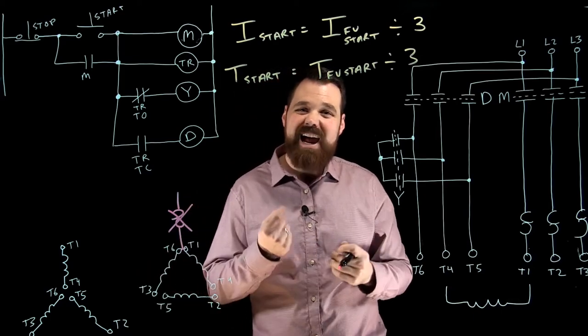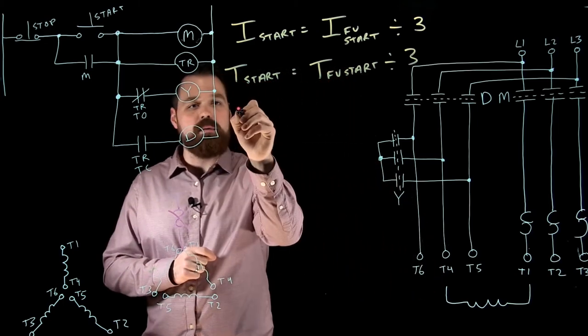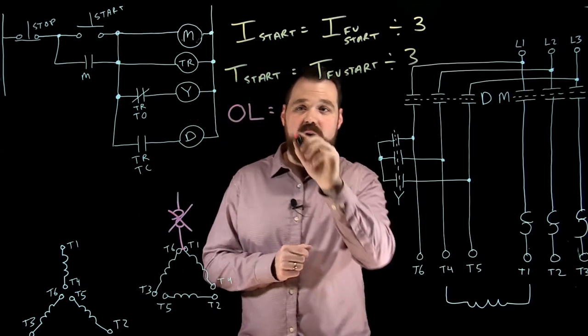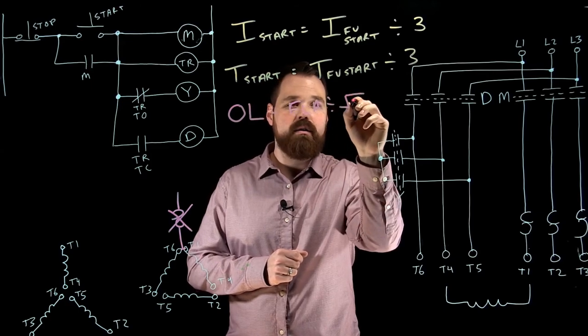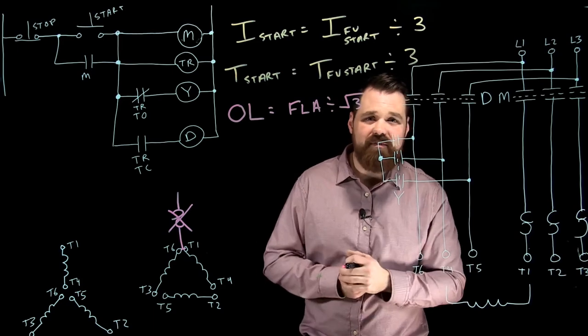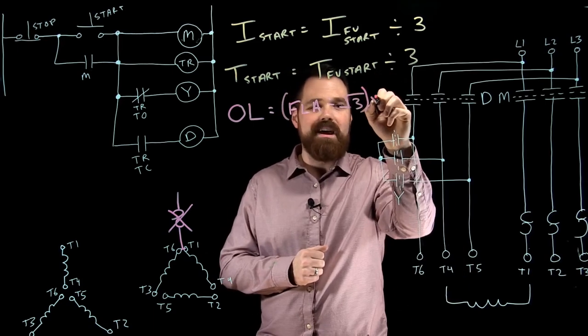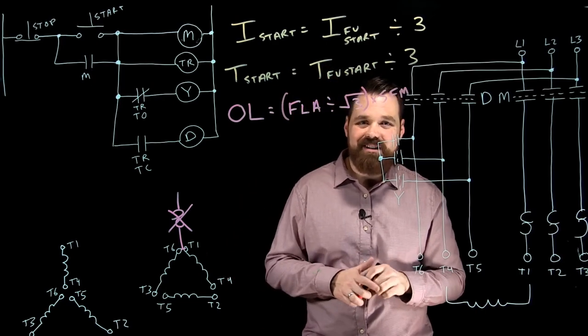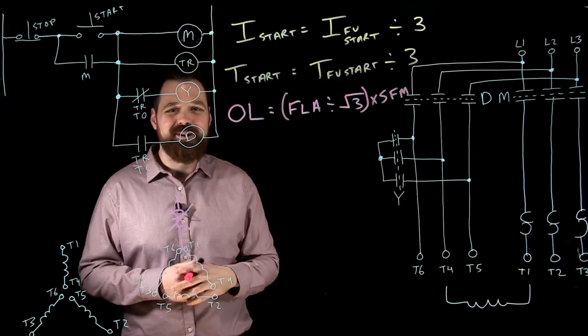In this case, our overloads have to be based off of phase current and not line current. So what we see when we're sizing our overloads is we are going to take our FLA, our full load current, divide it by root 3, because that's going to give us our phase current. You can also multiply it by 57%. So divide by root 3, and then we times it by our service factor multiplier, which we can find in the code book to size those overloads. Again, thanks for watching. I really hope this helped.